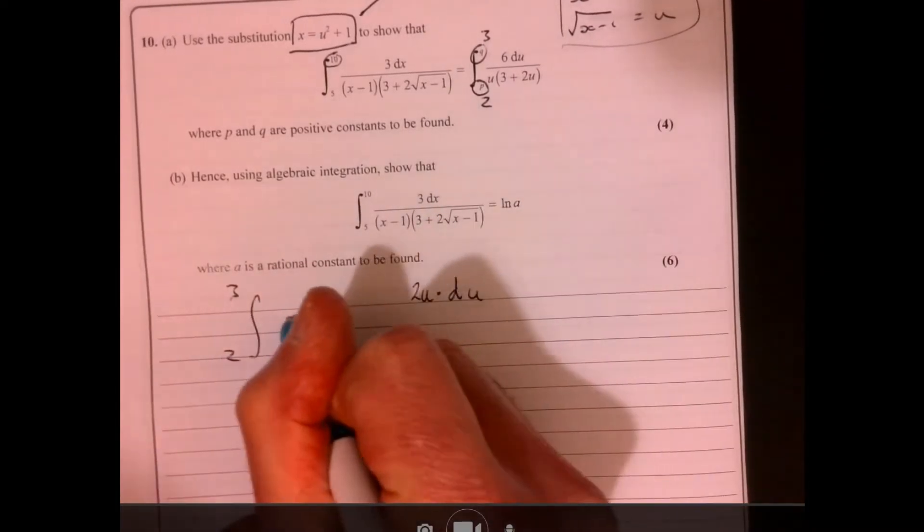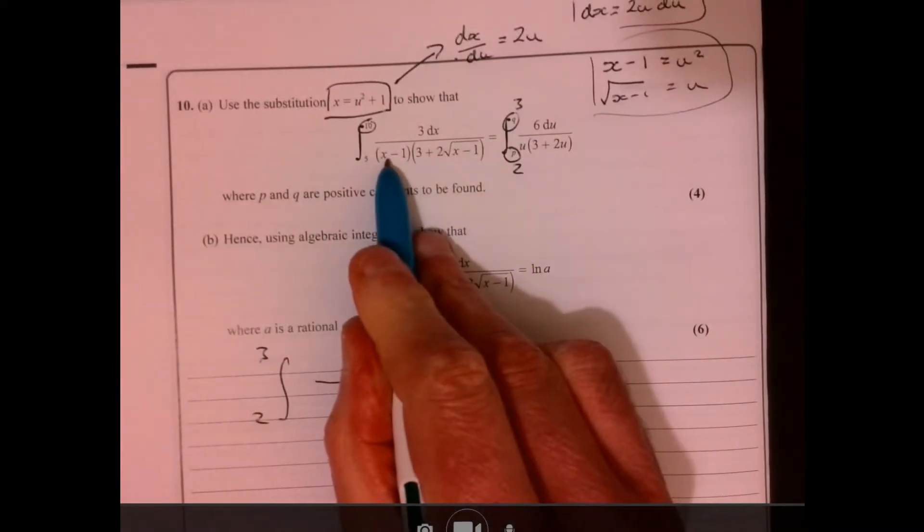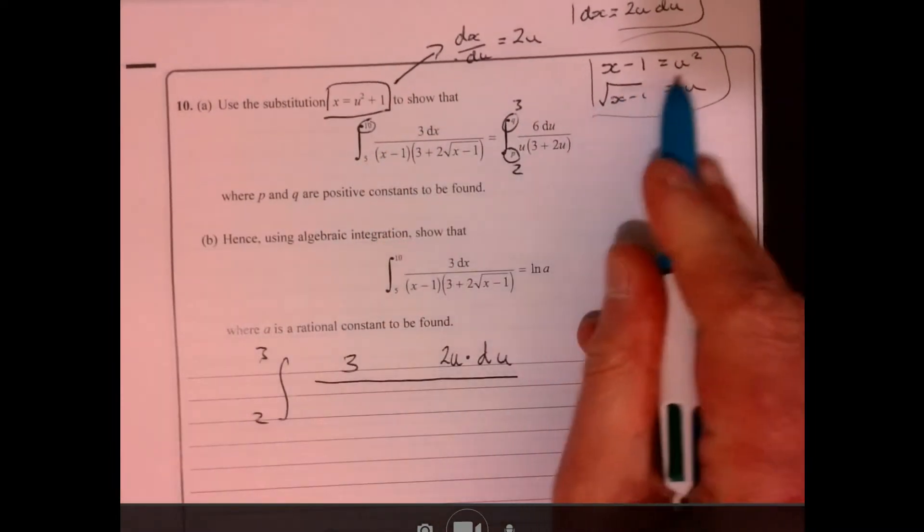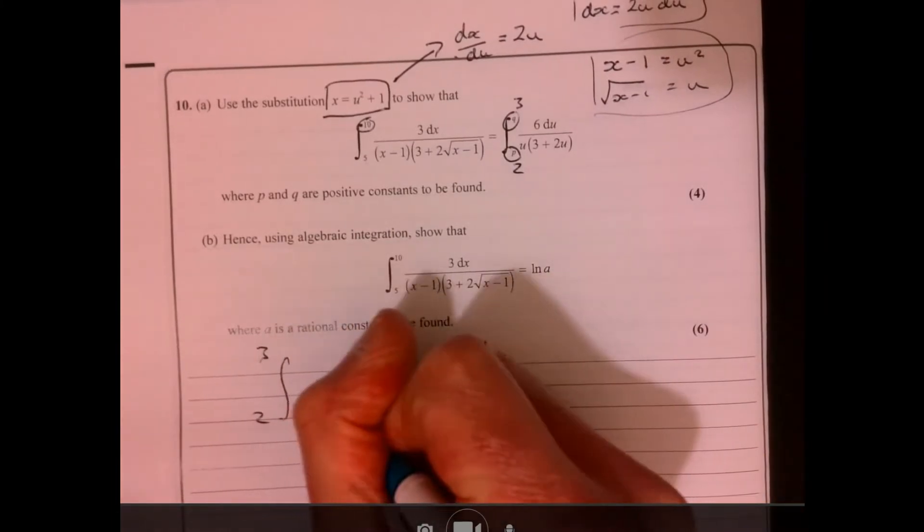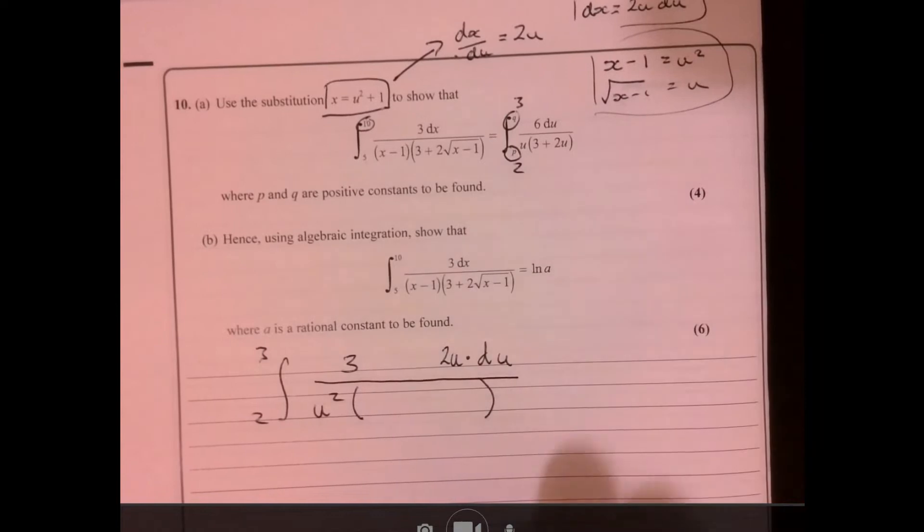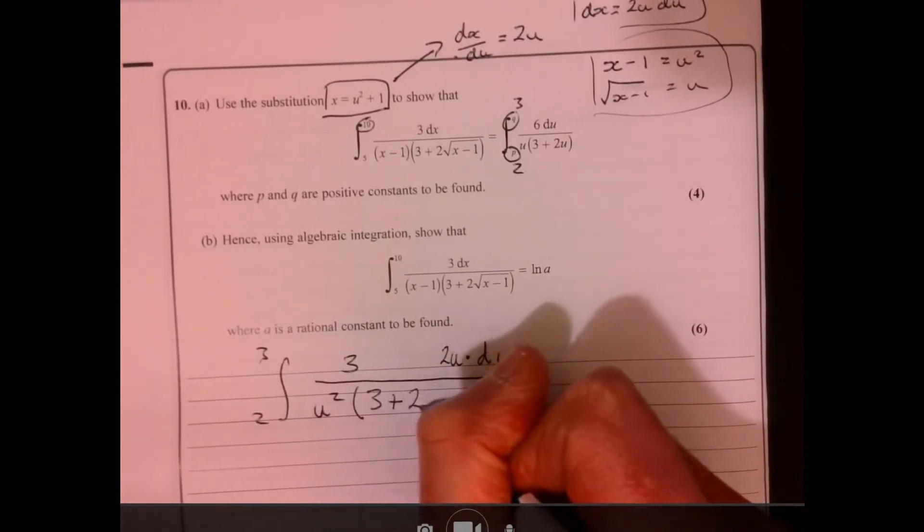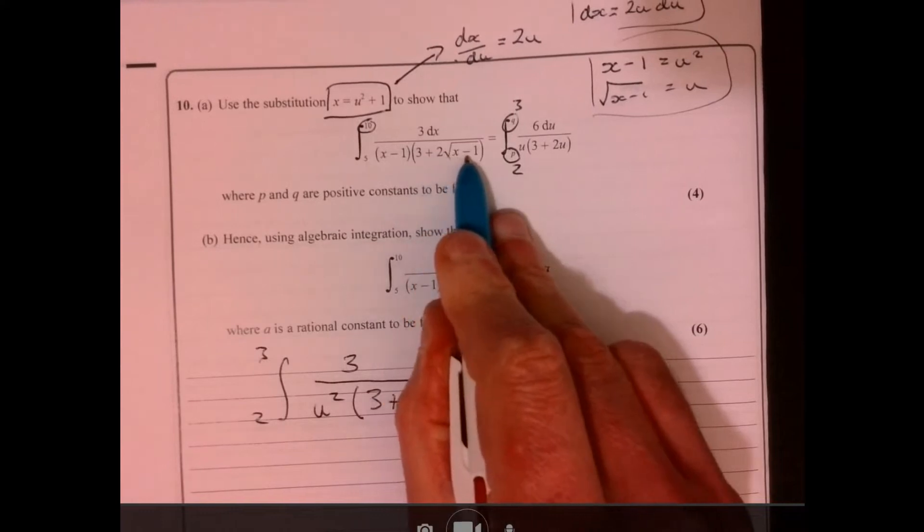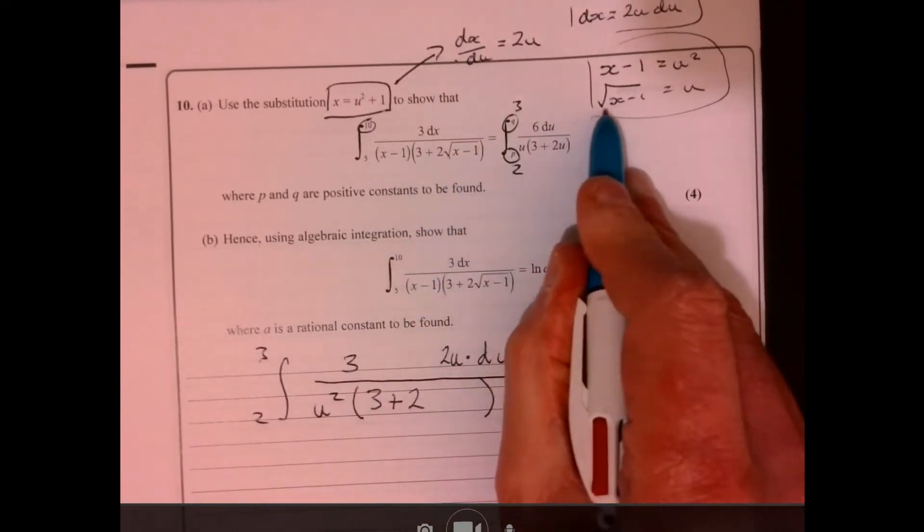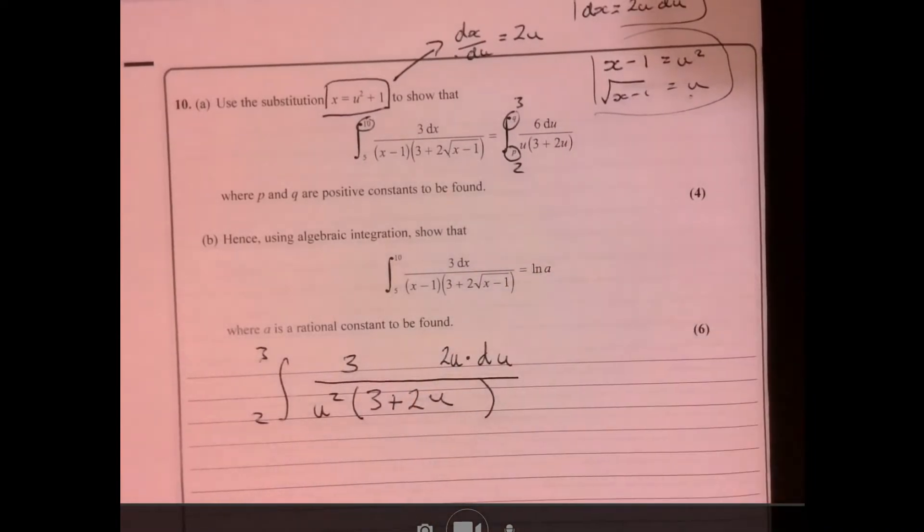And then all of that is over, we've got x minus 1. Well, x minus 1 is u squared. And then we're going to multiply this by 3 plus 2 root x minus 1. Root x minus 1 is u. And there we go.